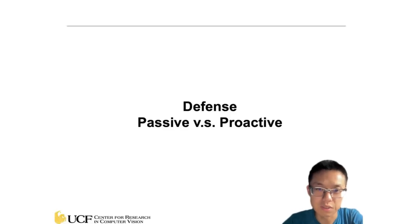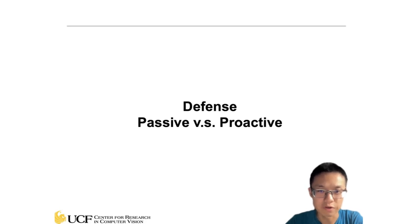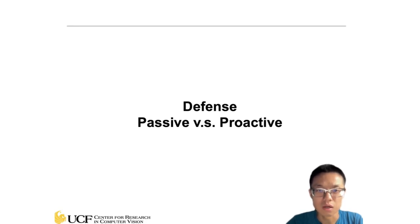Last lecture, we talked about adversarial robustness of machine learning models — specifically adversarial attacks and how we can generate perturbed images so that the machine learning model will fail the prediction. The most important thing now is how we can do the defense — how we can make the machine learning model robust to this kind of adversarial attack.